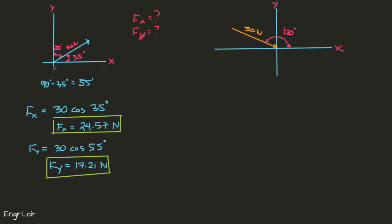In the first example, the force pointed away from the origin so the components were both positive. But this time the force is pointing towards the origin, so we need to consider the direction of the components. Since the angle is 120 degrees, the angle the force makes with the x-axis is 180 minus 120, which equals 60 degrees. The angle it makes with the y-axis is 120 minus 90, which equals 30 degrees.